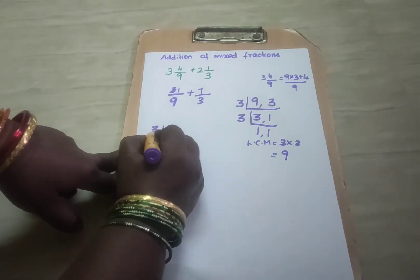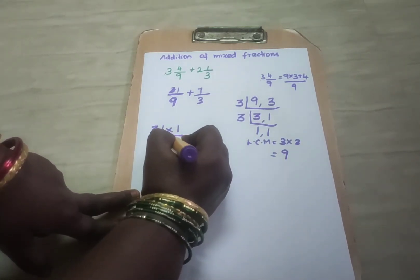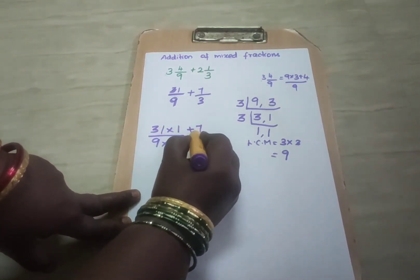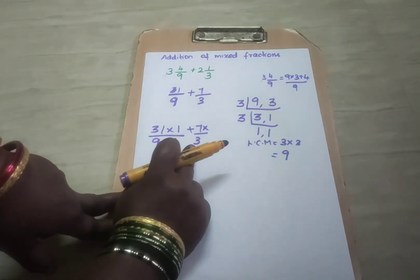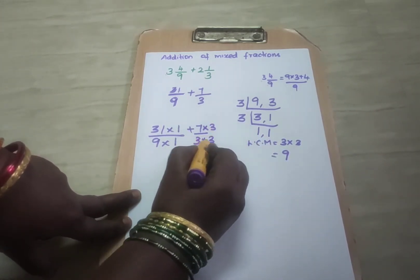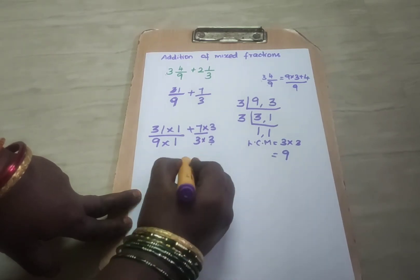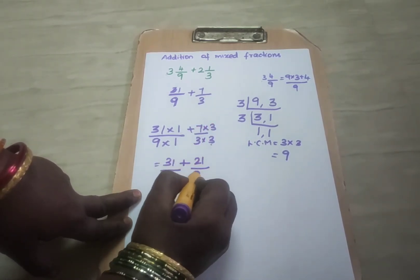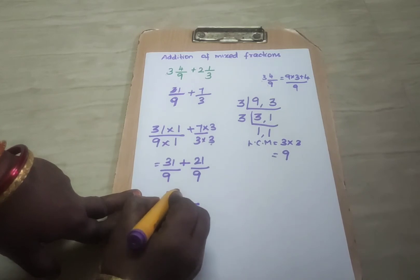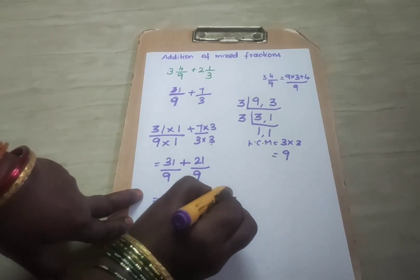Now write the first fraction. This 9 goes in the 9 table 1 time. So write 1, and the same 1 should be multiplied with the numerator and denominator: 31 into 1. The next fraction is 7 by 3. 9 goes in the 3 table 3 times — 3 threes are 9. The same number should be multiplied with the numerator also. So 31 by 9 plus 7 threes are 21 by 9. The denominators are same, so write the denominator as 9 and add the numerators: 31 plus 21 is 52 by 9.